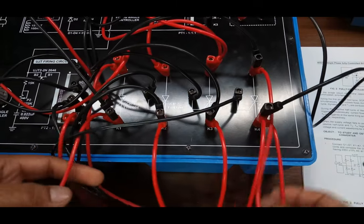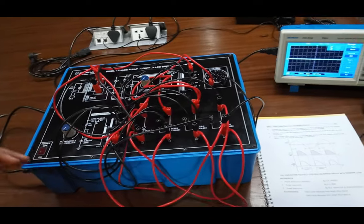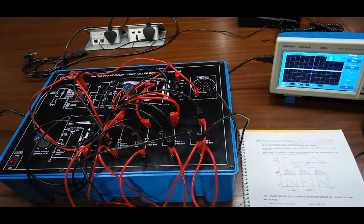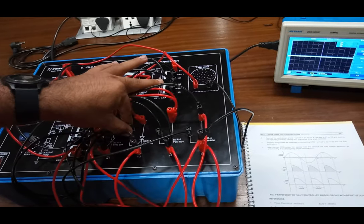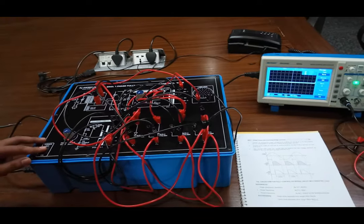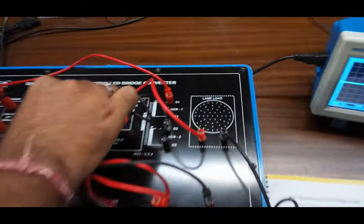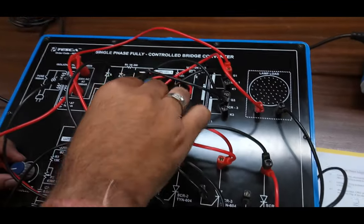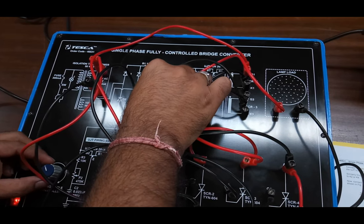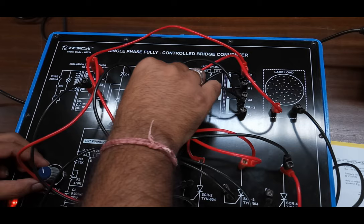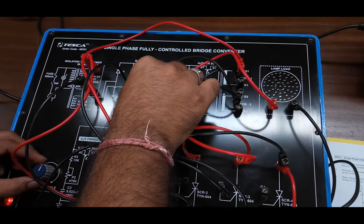Now after making connections always verify the connection once. We have verified our connections, these are correct. Now we power on the circuit and slowly increase the firing of both the firing circuits with these potentiometers. We will see the lamp load will start glowing up, the intensity of lamp load gradually increases.